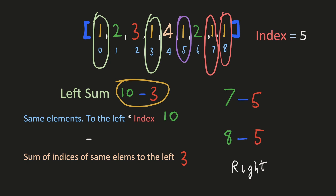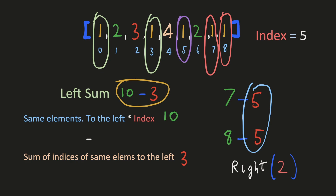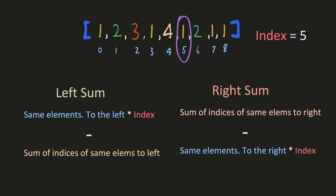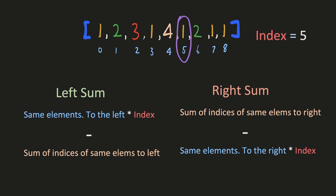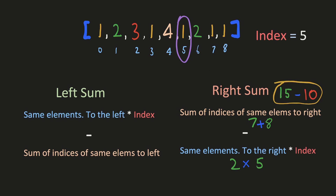Similarly for the right side, there are two elements to the right, and here 5 is lower than all the indices on the right. Hence we subtract 5 from each occurrence — subtracting 5 two times. For the positive part we take the index of each element, which is the sum of all indices to the right with the same value. We generalize: the sum of distances from the right equals the sum of all such indices to the right, minus the count of those elements multiplied by our current index. For example, the two indices sum together, and since there are two we subtract 2×5, giving a right-side distance sum of 5.